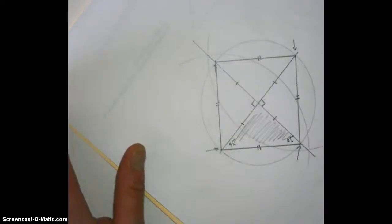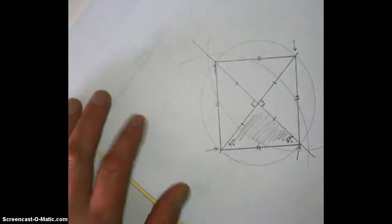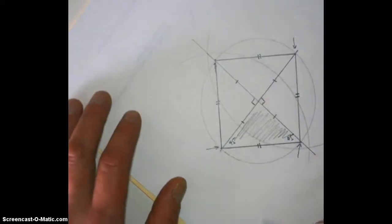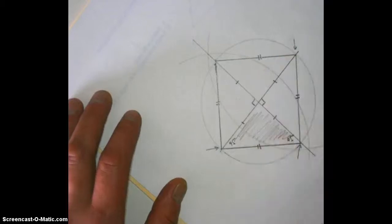The other thing to note is there's actually eight 45-45-90 triangles. There's these one, two, three, four small ones.